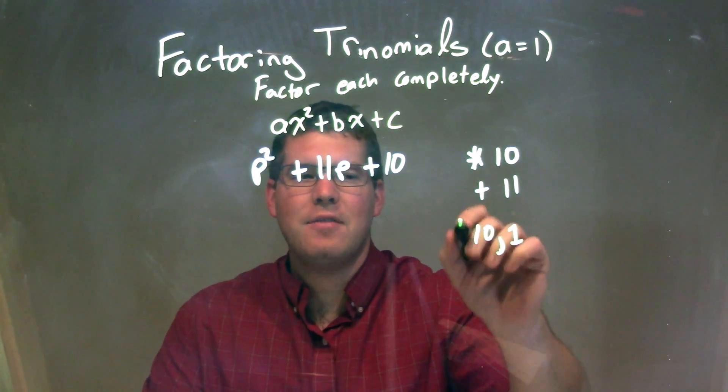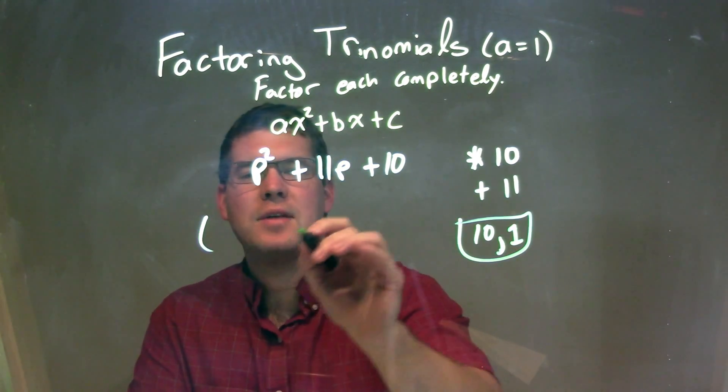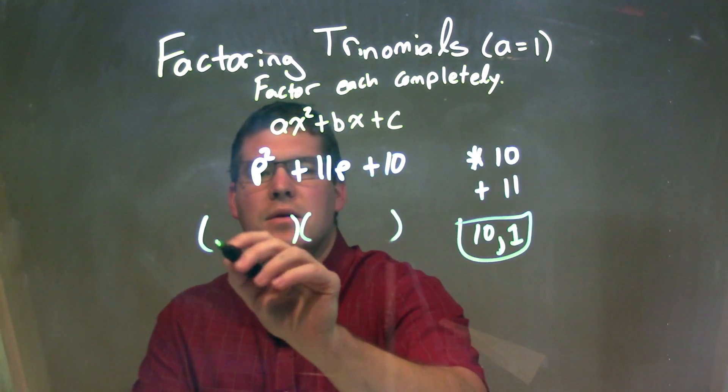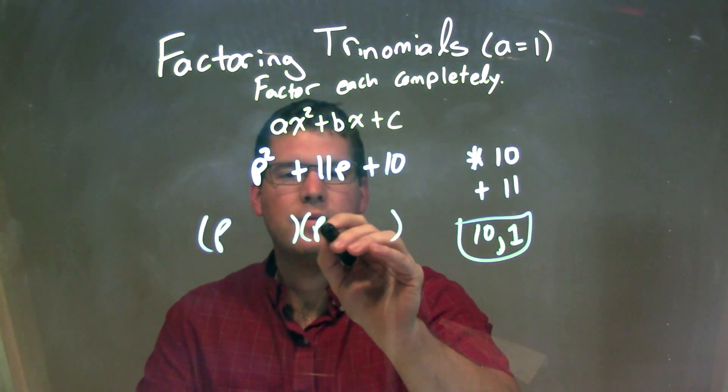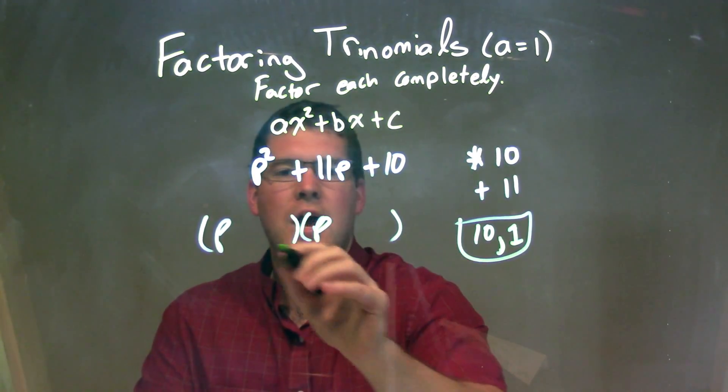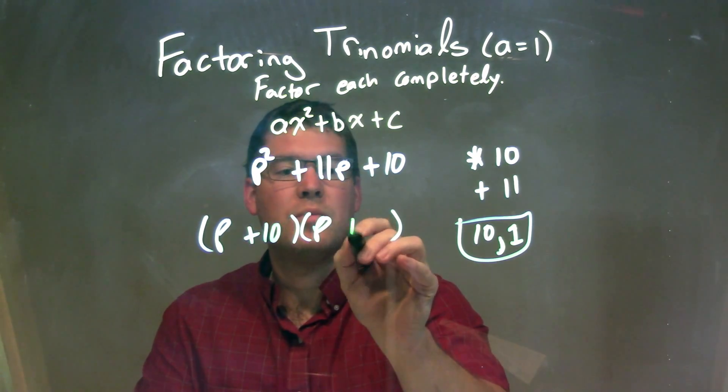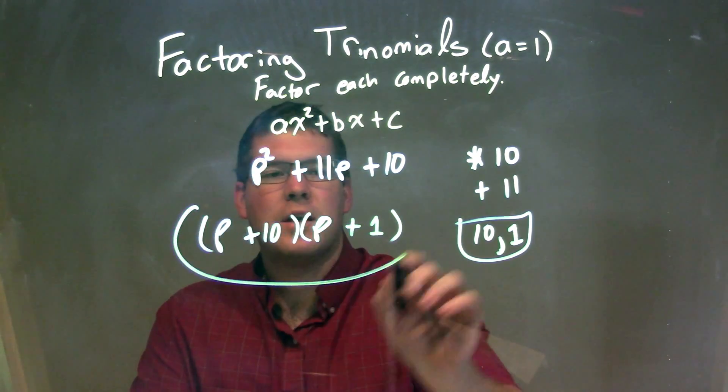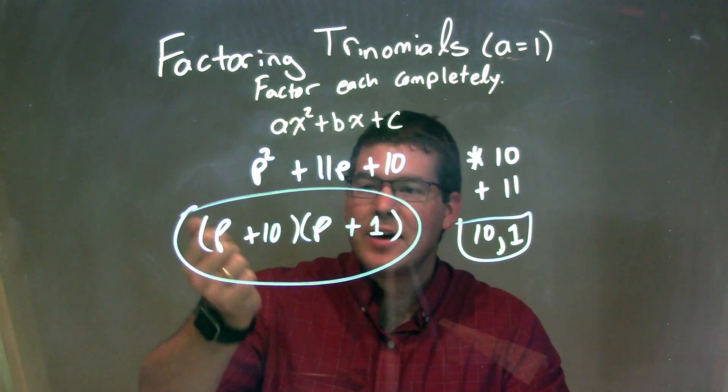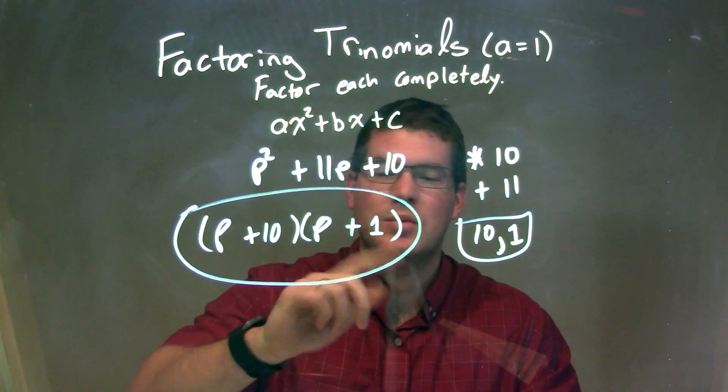So, as we have that there, this is a little tricky, but we can break this down into two parentheses, p at the beginning of each one, okay? And then we have a plus 10 and a plus 1, and there we go. Our final answer here is just our factored form of p plus 10 times p plus 1.